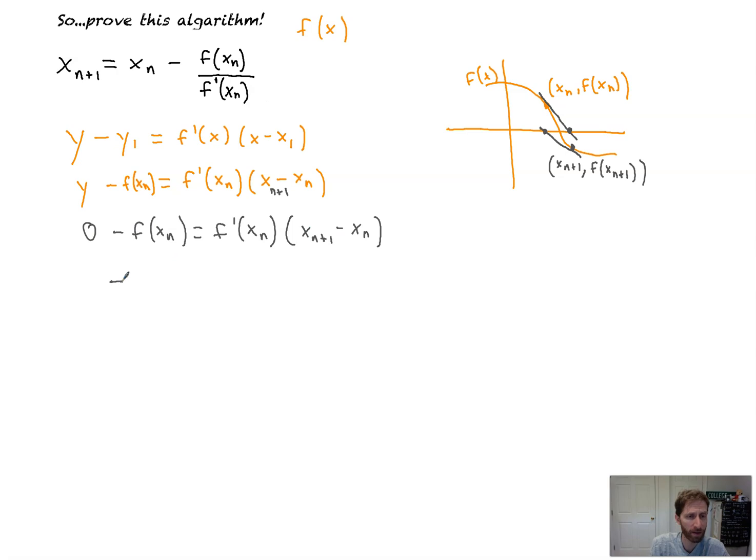So I've got 0 minus f of x sub n. So that's minus f of x sub n. I will distribute. Actually, you know what? No, I'm going to divide both sides by f prime x sub n. You see where the... Ooh, we're getting closer.